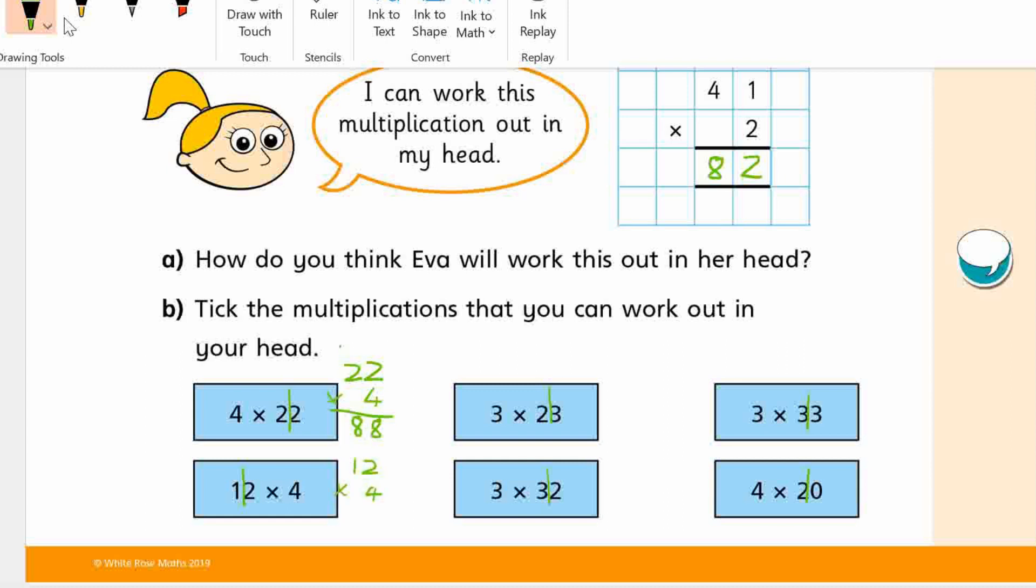And again, we have 4 times 2. So you're times in very low numbers. 4 times 2 is 8. 4 times 1 is 4. Okay. And 3 times 3 is 9. 3 times 2 is 6. And here we do 32 times 3. So 3 times 2 is 6. 3 times 3 is 9. Okay.